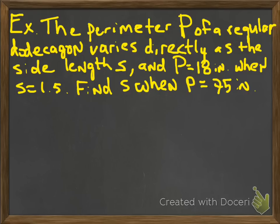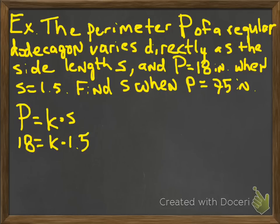Okay, so here's another example of direct variation. The perimeter p of a regular dodecagon varies directly as the side length s, and p is equal to 18 inches when s is equal to 1.5 inches. Find s when p is equal to 75 inches. Okay, so now you have to realize how this reads. The perimeter p varies directly, so we're saying p is like the y. So it's going to be p equals k times, because we're saying varies directly. Varies directly is making you think k times, k times s. Okay, plug the numbers where they belong, so 18 and 1.5.